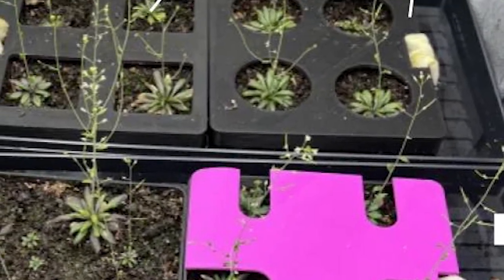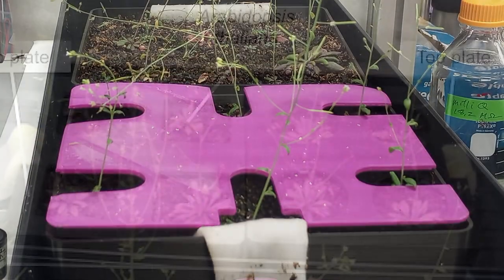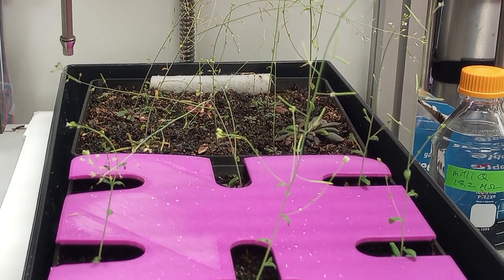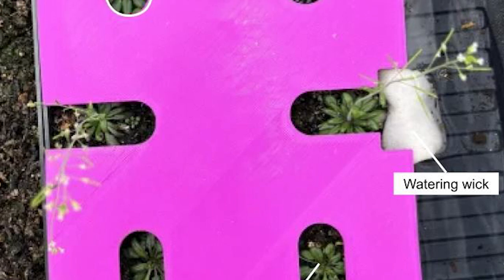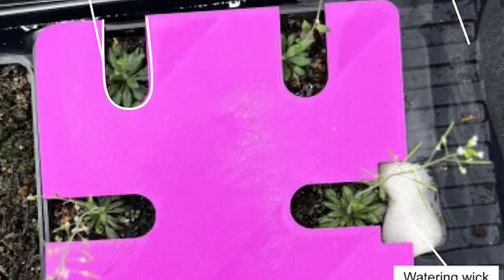During the second and third growth cycles of Arabidopsis, we tested different lid types attached to basins. We were able to find which lid type proved to be most effective for water retention and plant growth for future use.